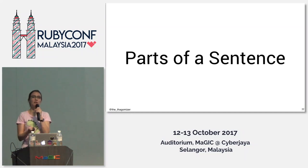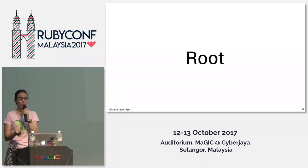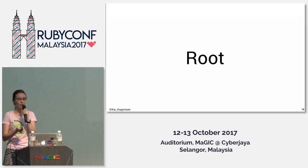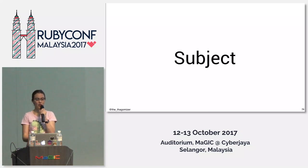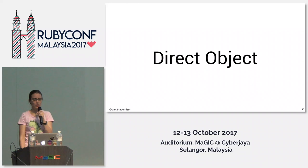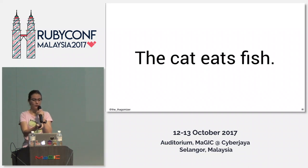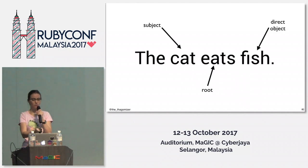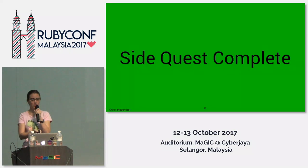We also have the parts of a sentence. The root is the only required part of the sentence — which means it's the verb. Then we have the subject, which is the thing that does the verb: 'Gorilla thinks,' 'Aja speaks.' And then there's the direct object — the thing that the verb happens to. So: 'the cat eats fish' — the cat is the subject, eats is the root, and fish is the direct object. Side quest complete.